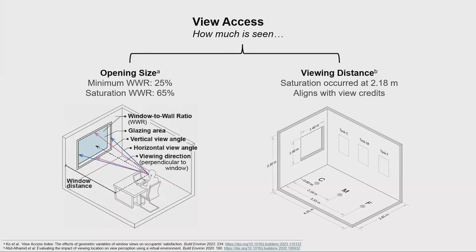Interestingly, with this view distance criterion, when we look at green certification systems, this broadly describes the credits that are assigned to window view quality.